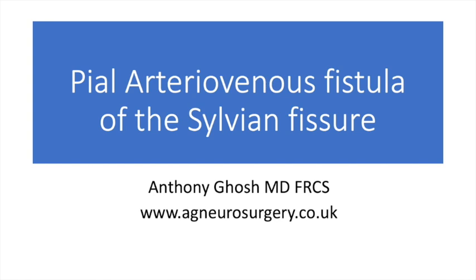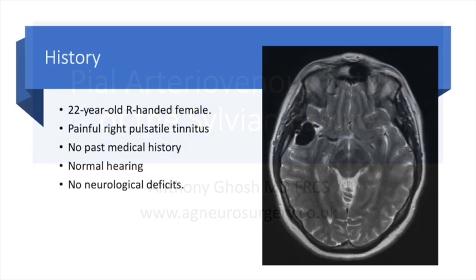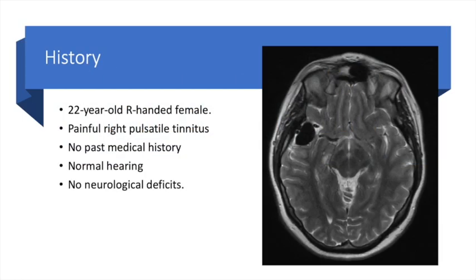This is a case of a Pial arteriovenous fistula within the sylvian fissure. A 22-year-old right-handed lady initially presented with otalgia. On careful history taking she was found to have an associated right pulsatile tinnitus. She had no past medical history and no neurological deficits on examination with normal hearing.